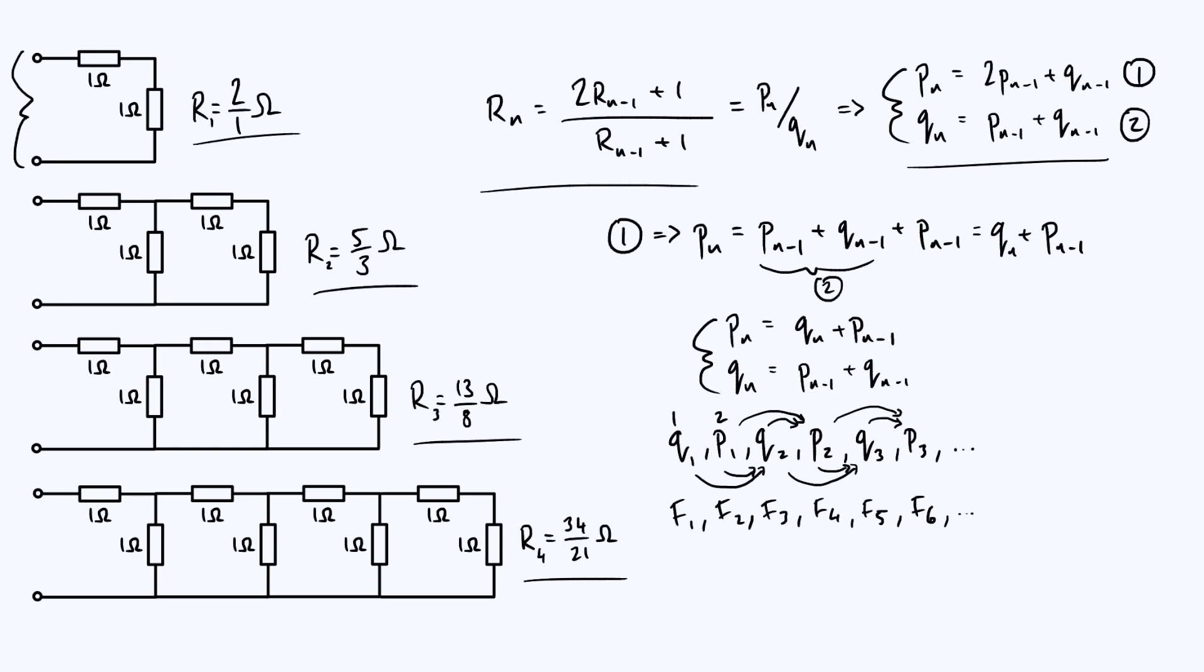Now note that there are different conventions for the Fibonacci numbers in terms of where you start, so if you look at other sources they might not say that F1 is 1 and F2 is 2. Another common convention, for example, is to start with 1 and 1.